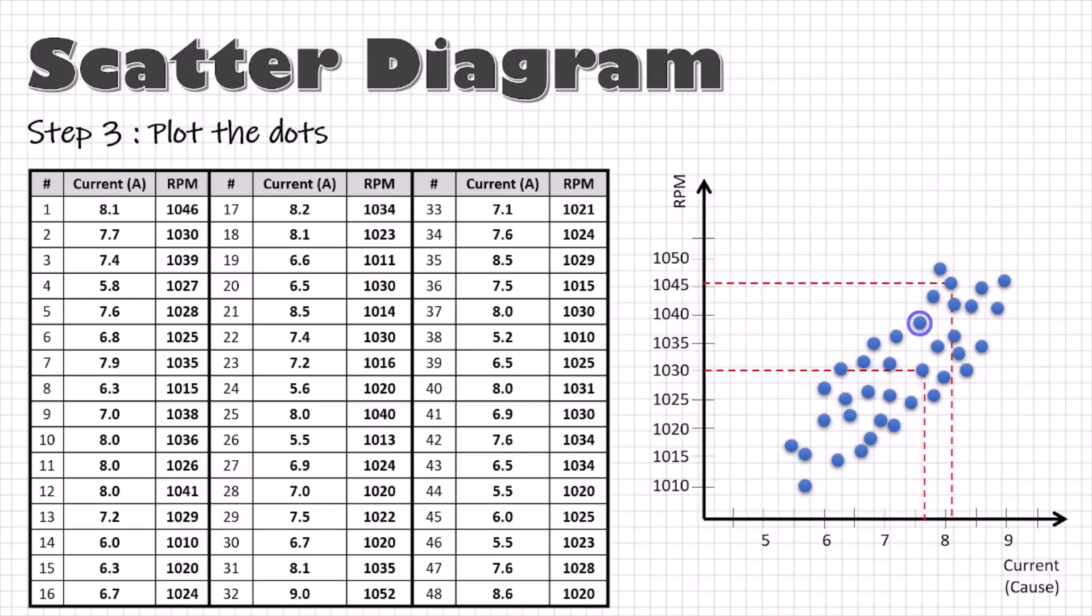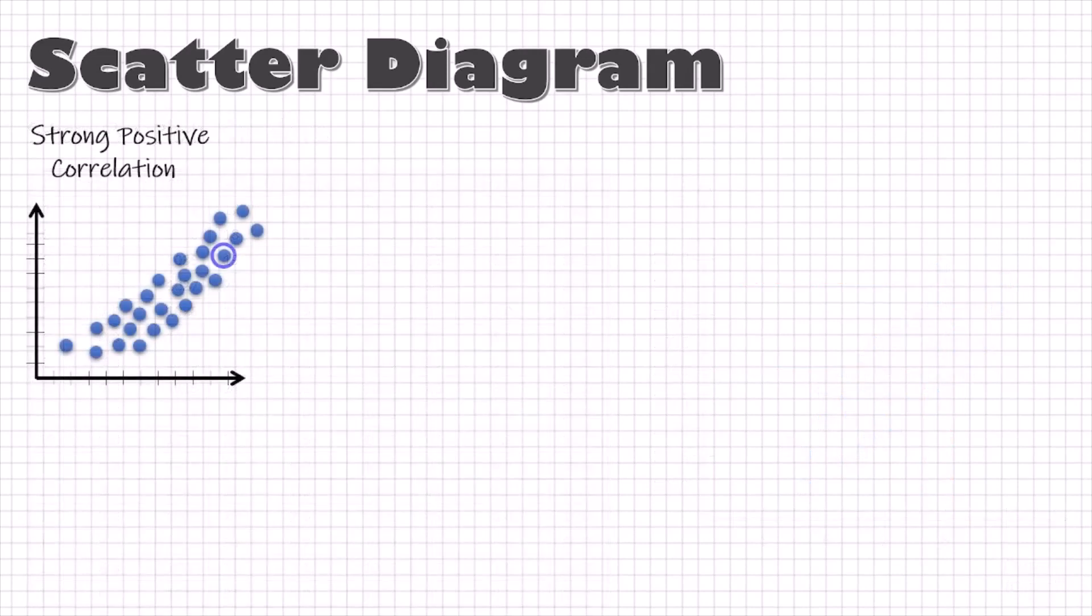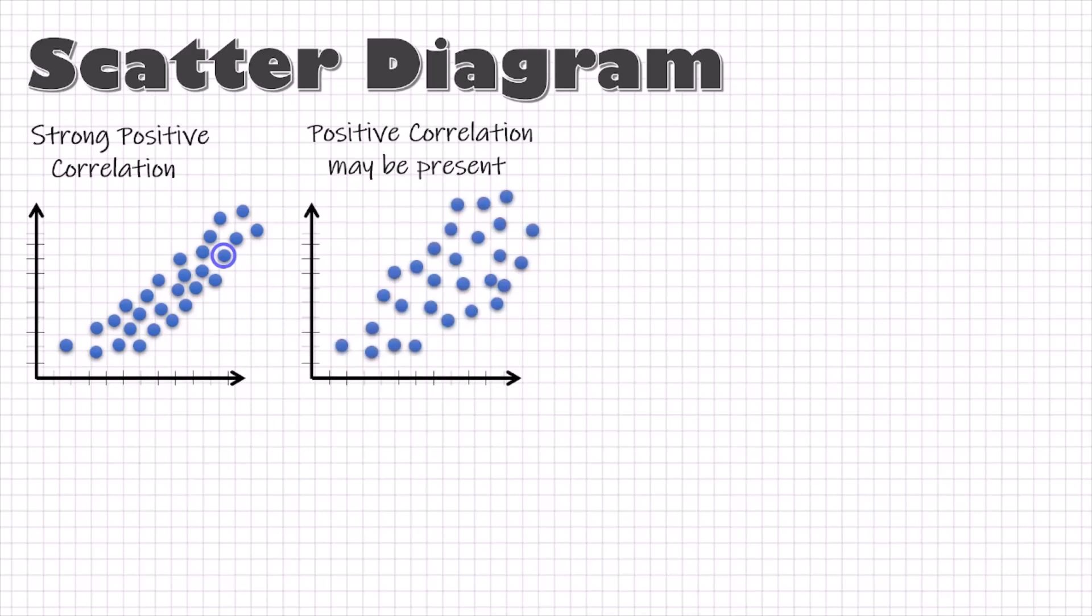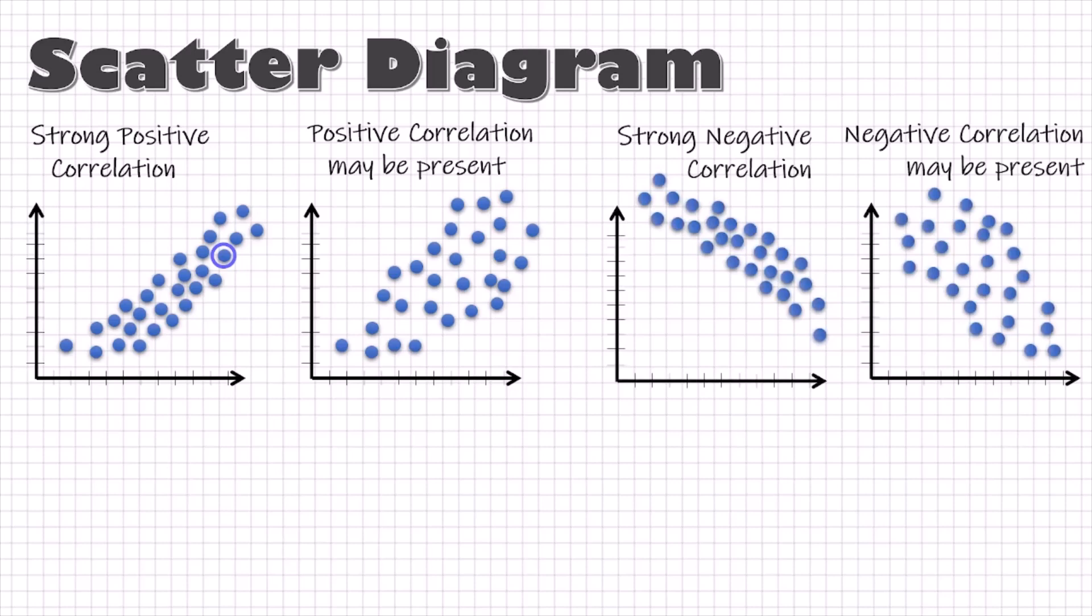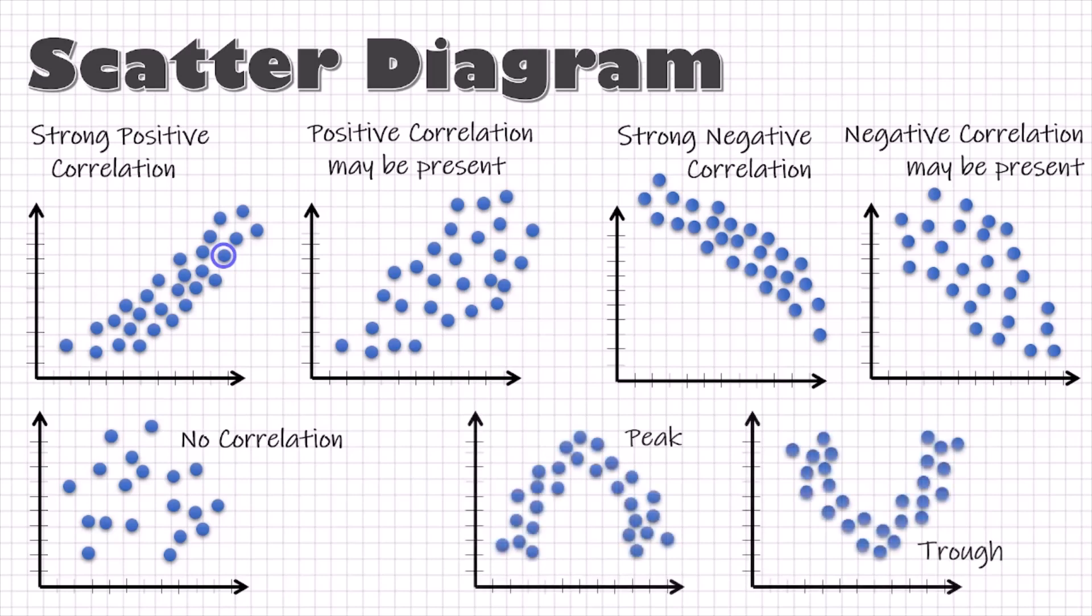Now just looking at the scatter diagram, we can identify a relation between the two factors. For example, a plot like this will represent that a strong positive correlation exists. And a plot with more dispersion or variation represents that a positive correlation may be present. Similarly, these are the plots for negative correlations. And a plot like this means there is no correlation between the two factors and they are independent of each other. Very rarely, you may get a plot with peaks and troughs, which could mean there is a relation between the two factors which changes the direction at a particular point.